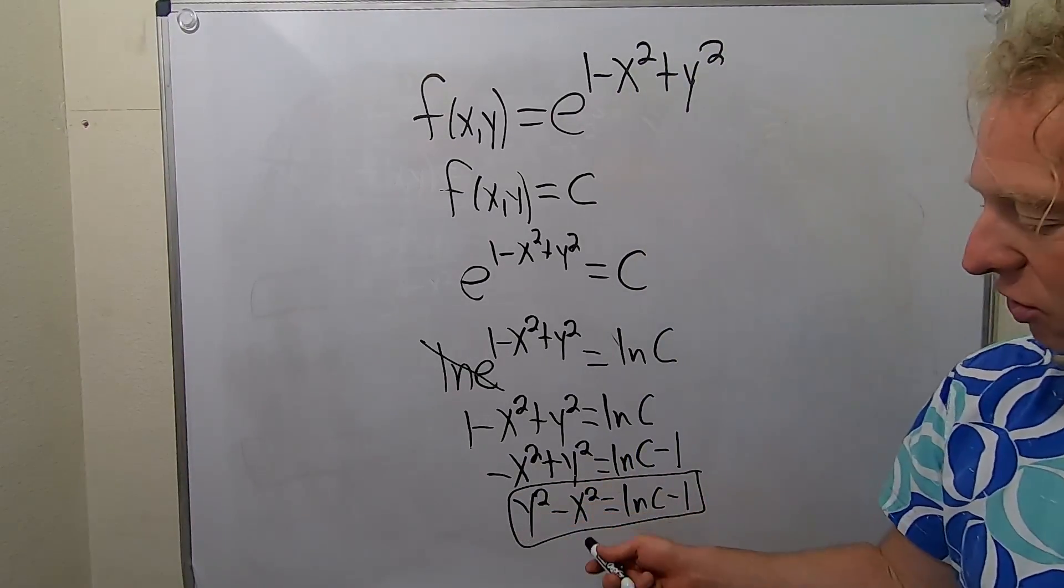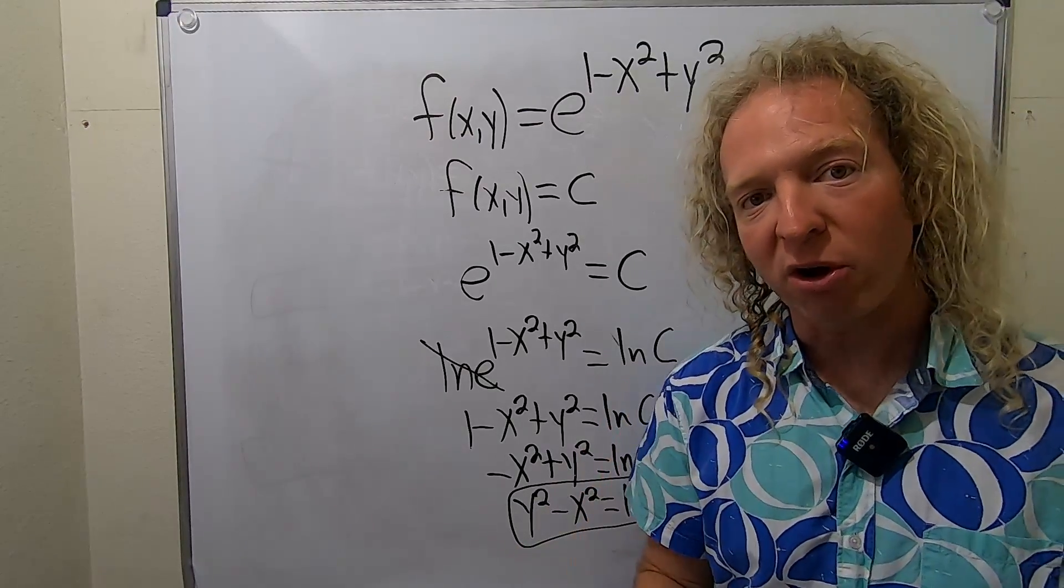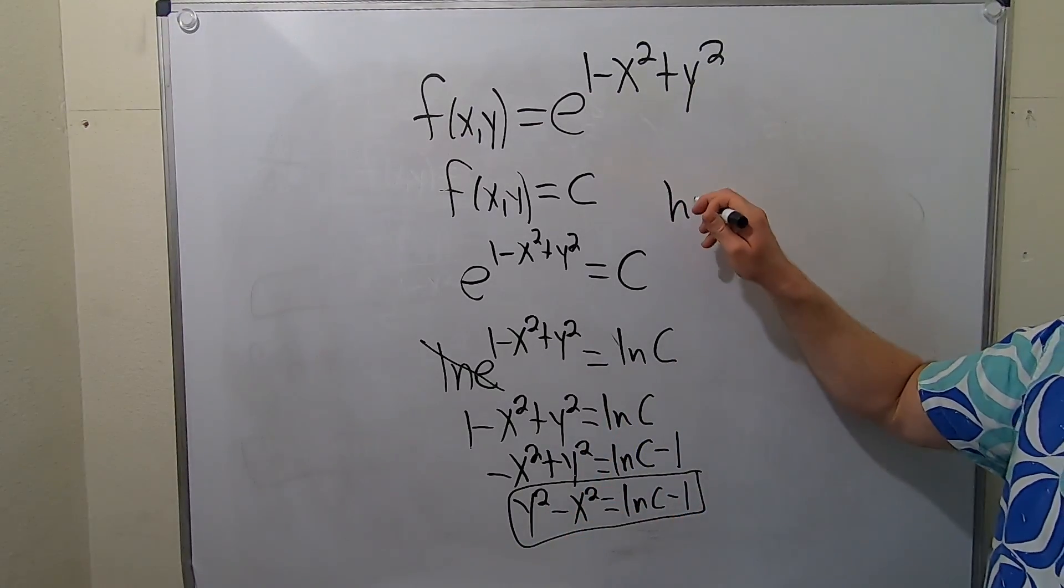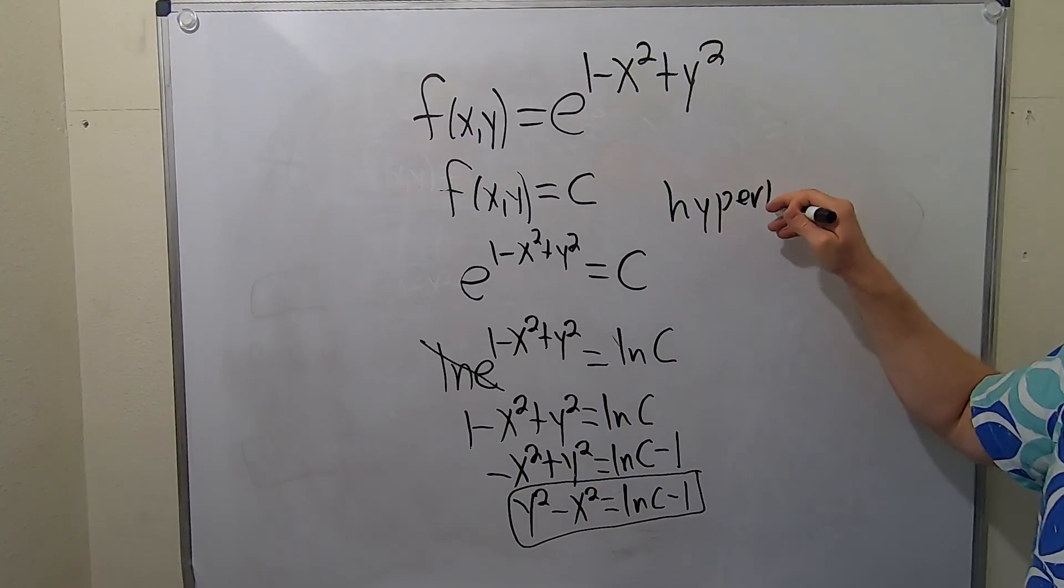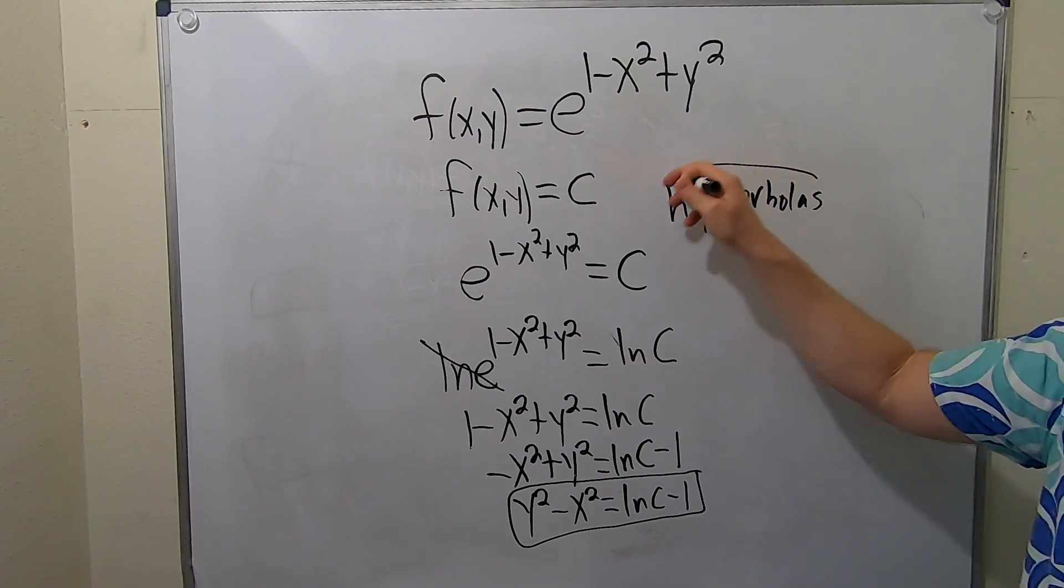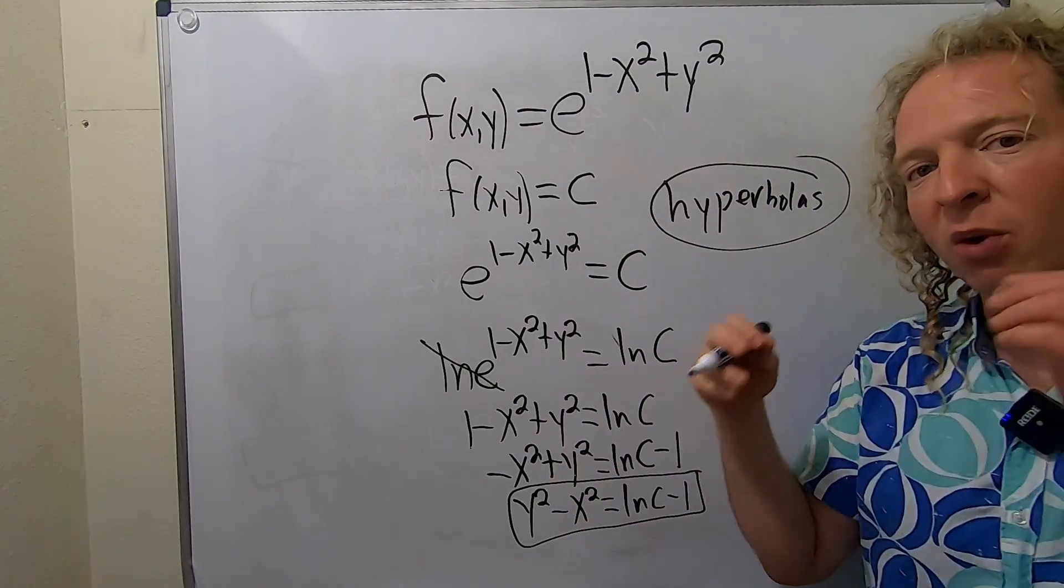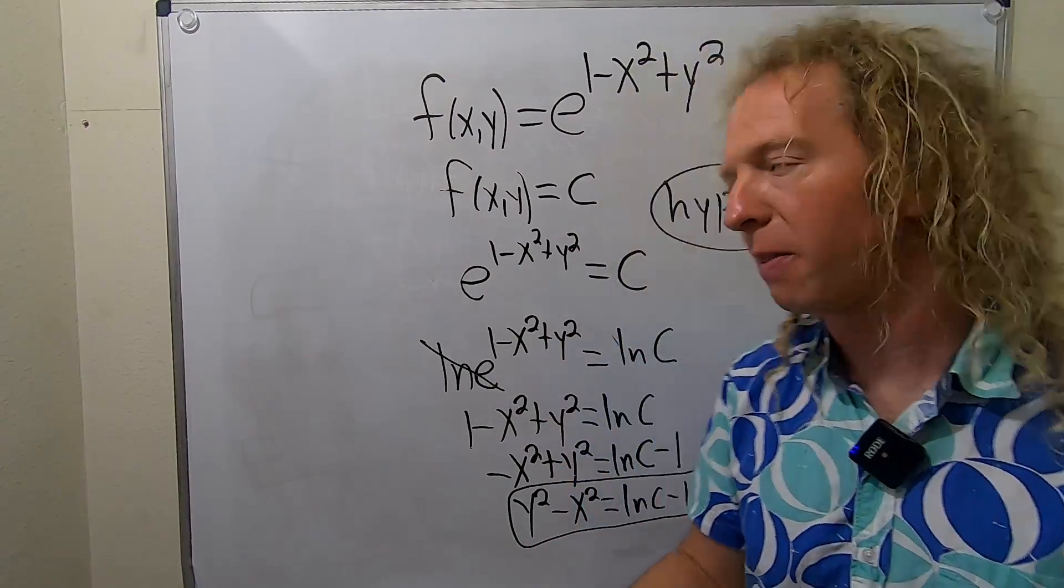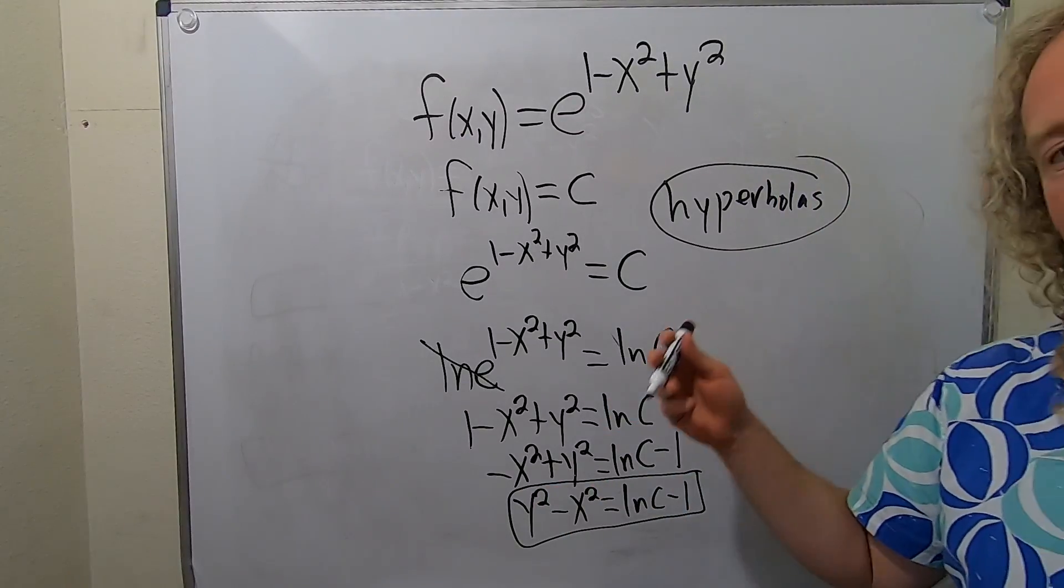Whenever you have x and y both being squared and you have a minus, if you recall, these are hyperbolas. So the answer to this question is hyperbolas. So as long as you get to a point where you can identify what the two-dimensional curves are and then just write the answer down, you're good to go.